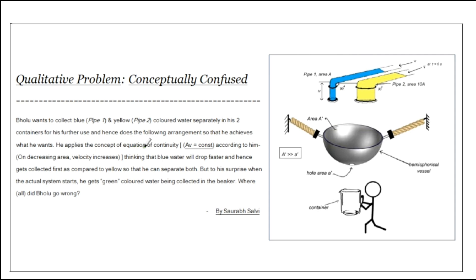He applies the concept of the equation of continuity — Av = constant. According to him, on decreasing area velocity increases, and on increasing area velocity decreases. He applies this equation of continuity thinking that blue water will drop faster and hence gets collected first as compared to yellow water, so that he can separate both.